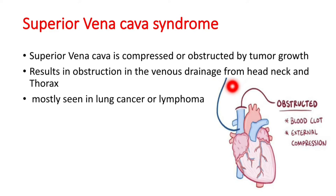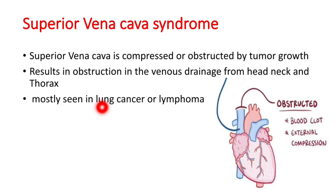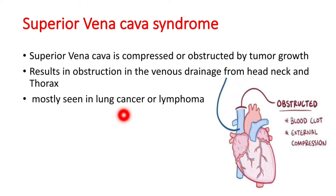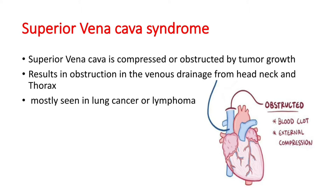This obstruction or tumor growth is mostly because of lung cancer or lymphoma, and more specifically it is because of non-small cell lung cancer in about 50% of cases. Other reasons for superior vena cava obstruction can be blood clot formation or aneurysm.